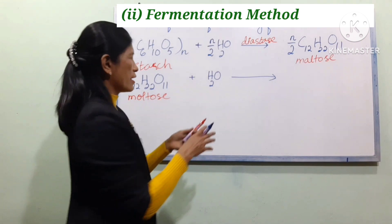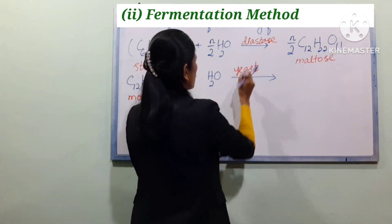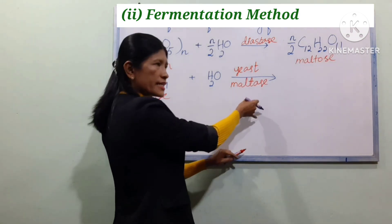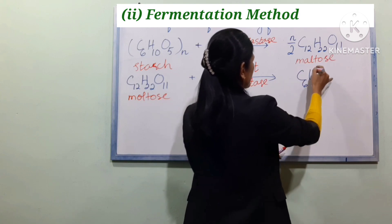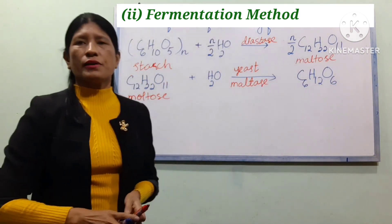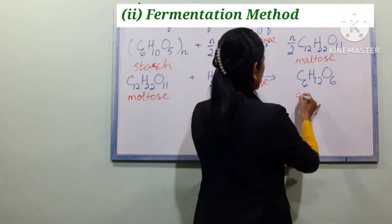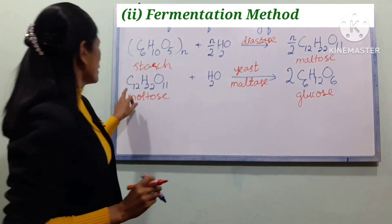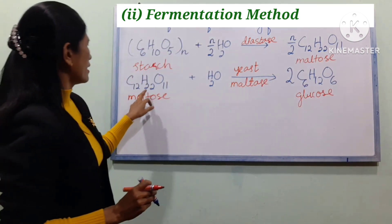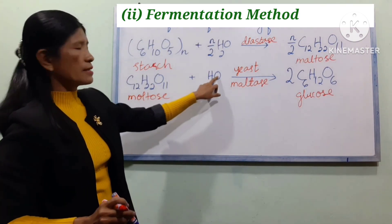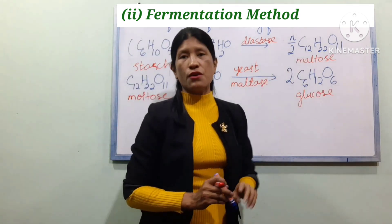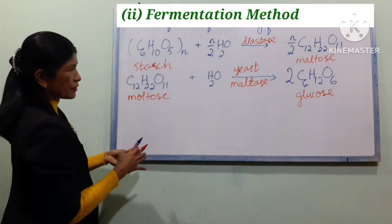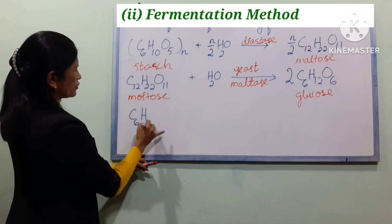Yeast contains the enzyme maltase, spelled M-A-L-T-A-S-E. The enzyme maltase breaks down maltose into glucose. Glucose has the chemical formula C6H12O6.